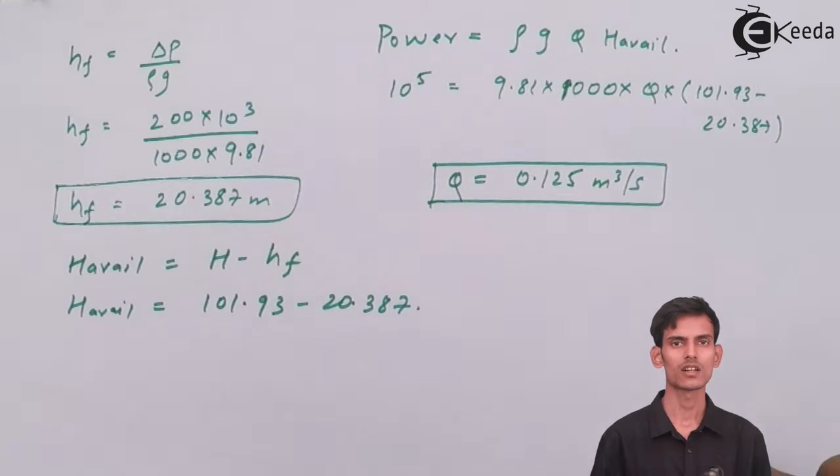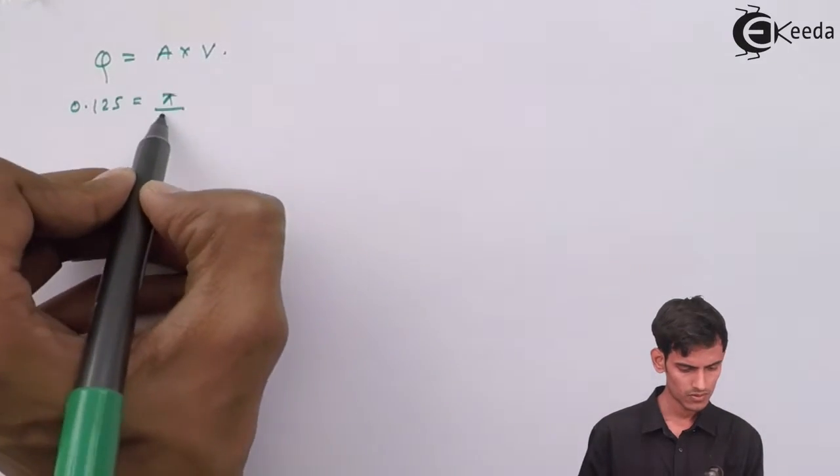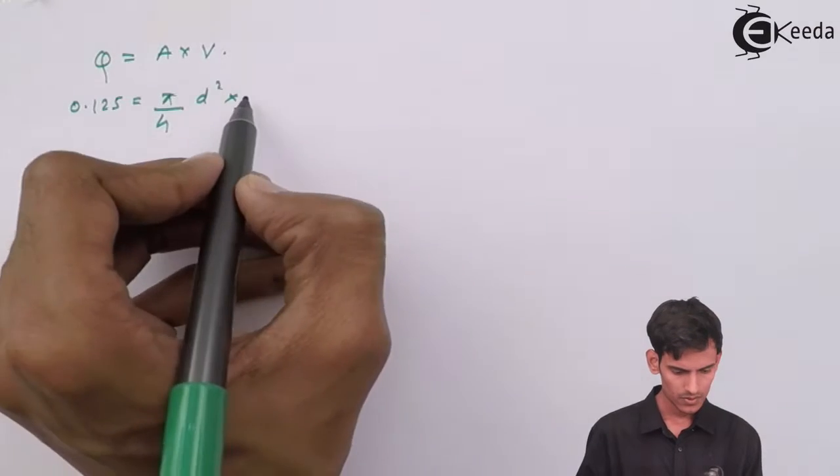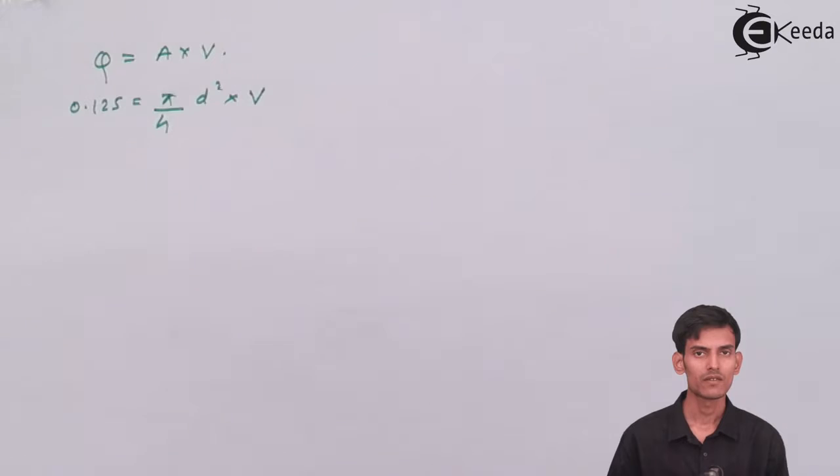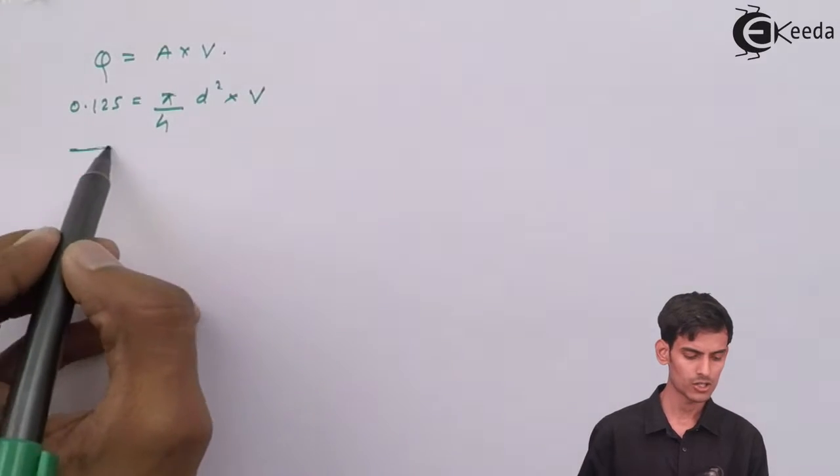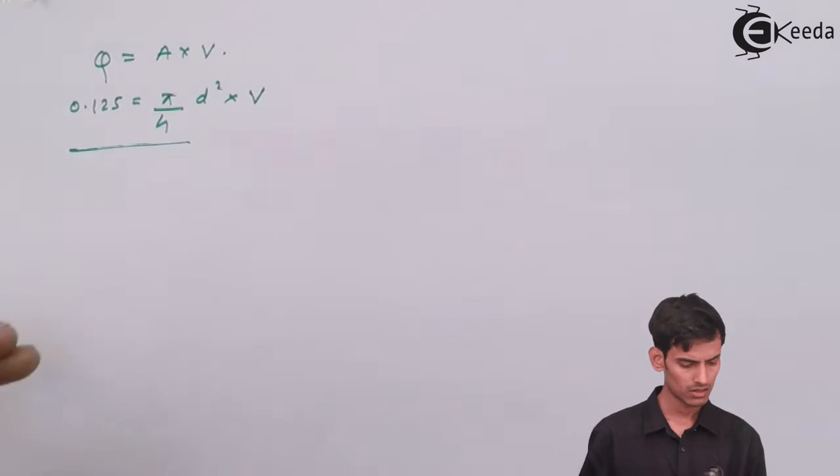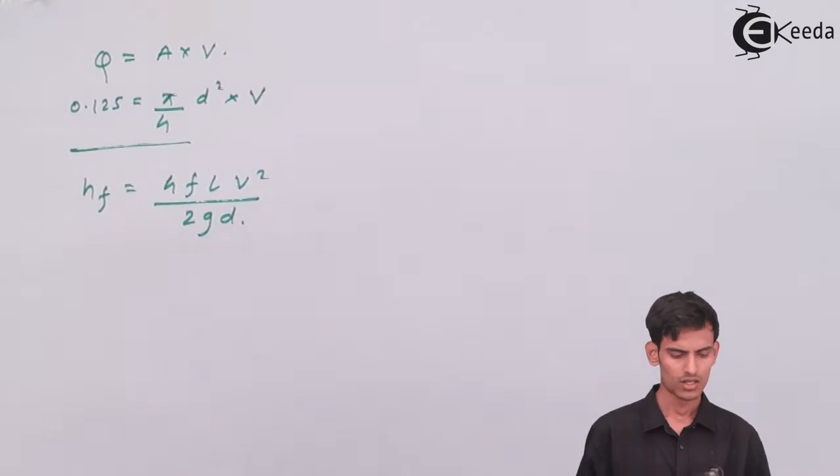But the question is not asking about discharge. We are asked to calculate the diameter. Once you know the discharge, you can very easily calculate the diameter. Let's see whether using q equals a times v we can find the value of diameter or not. Nowhere in the question will you see that the value of velocity is given. So you cannot use this equation to calculate the diameter since velocity is not known. Let's find something else. Let's use the Darcy equation and see whether we can get the value of diameter using that.